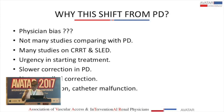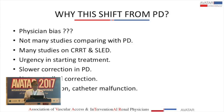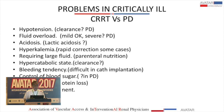There is lower and less controlled correction with PD, which matters in critical care. If I want to remove 500 ml per hour, I can't guarantee that with PD, but I can with CRRT. There is also fear of infection and catheter malfunction — if you operate, place a catheter, and it doesn't drain, you are in trouble.